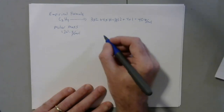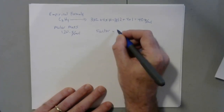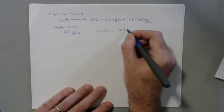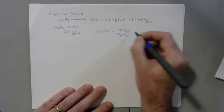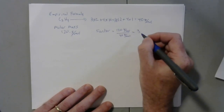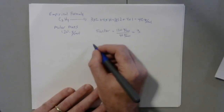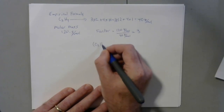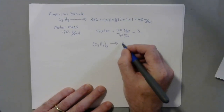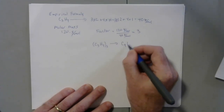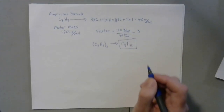Comparing that to our molar mass of 120 grams per mole, we see there's about a factor of 3. So our factor is 120 grams per mole divided by 40 grams per mole, which gives us a factor of 3. That means we've got C3H4 and three of those units. So our molecular formula will be C9H12, and that would be the molecular formula of the compound.